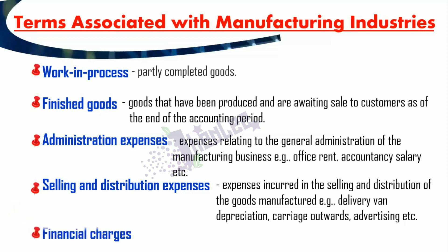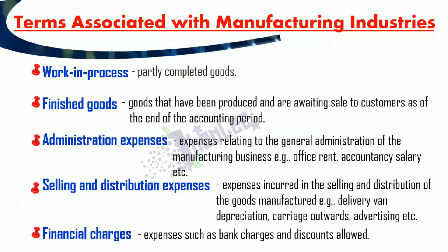The final category of expense is financial charges. When preparing the income statement for a manufacturing business, after generating your gross profit, your expenses are divided into three categories: administration expenses, selling and distribution expenses, and financial charges.